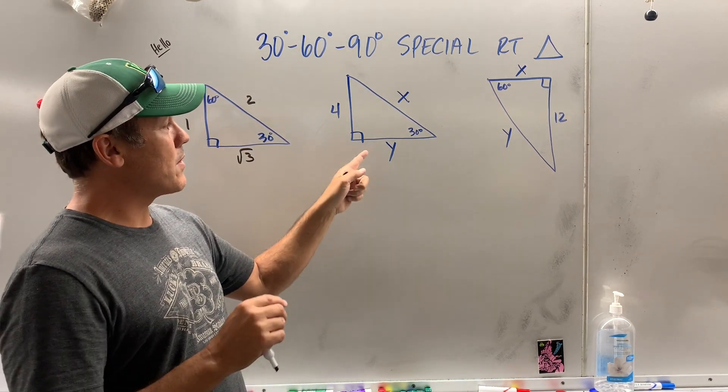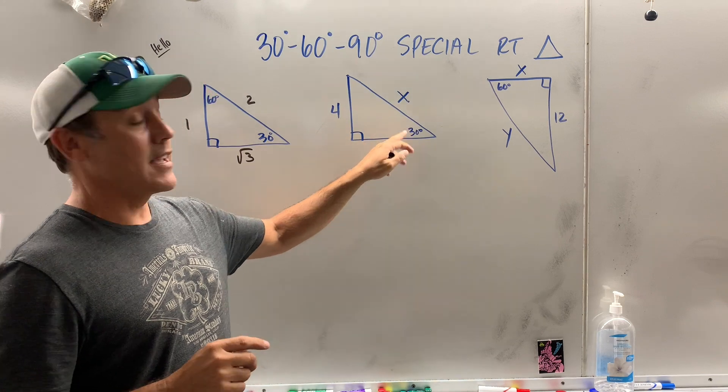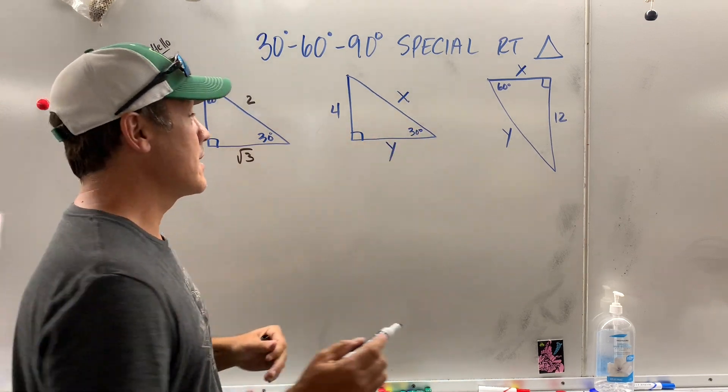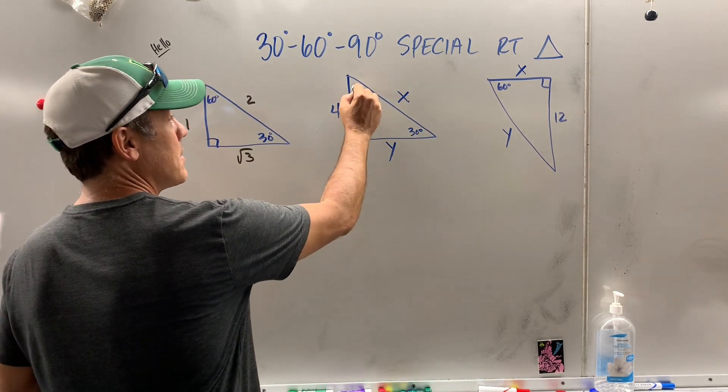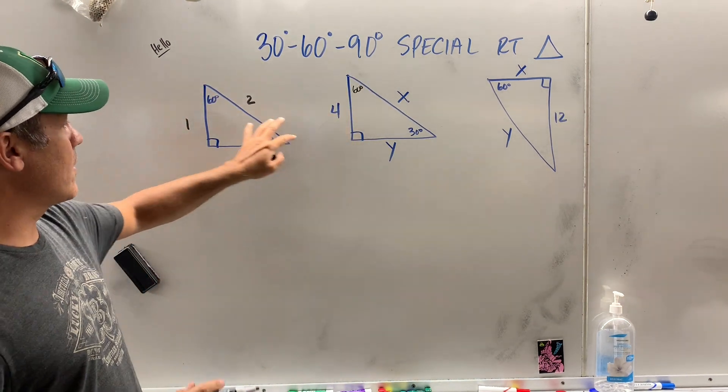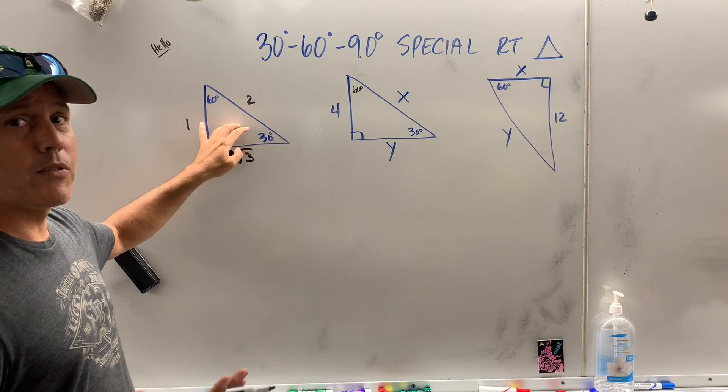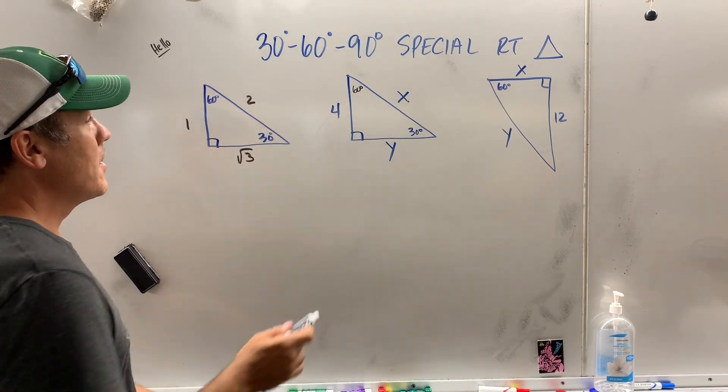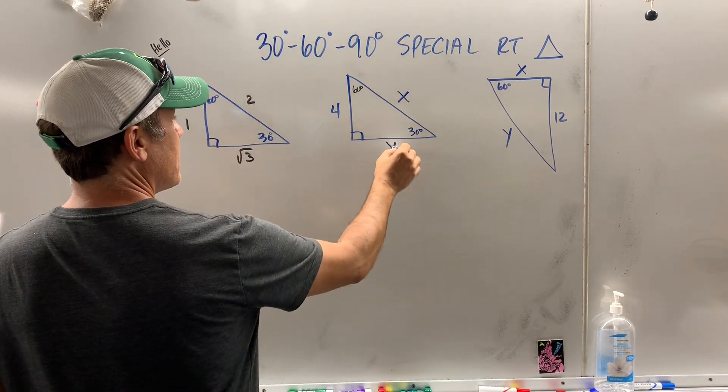So, when you see a triangle that's a right triangle, and you see a 30, you should be getting excited because you know this has to be 60. So, it's a 30, 60, 90. Now, this triangle is oriented the exact same way, which makes this question a little easier.